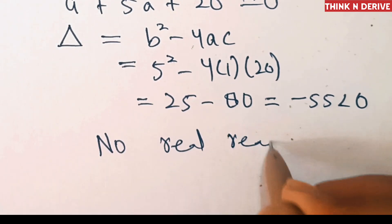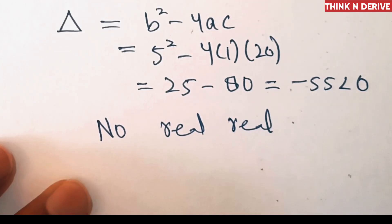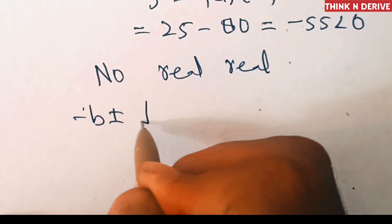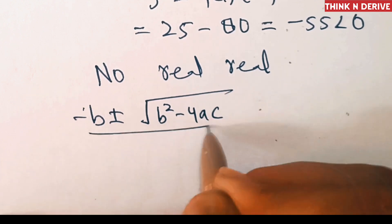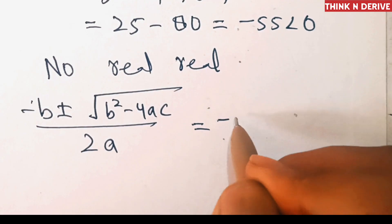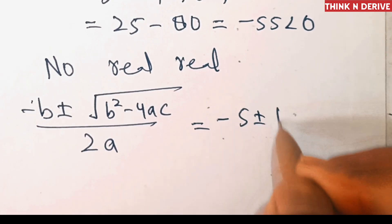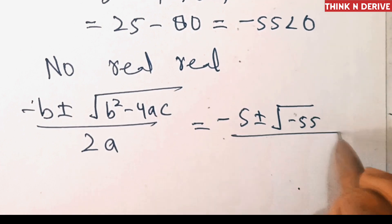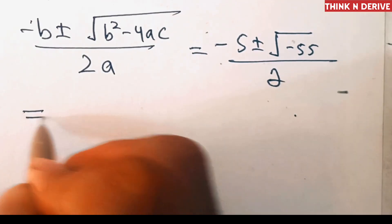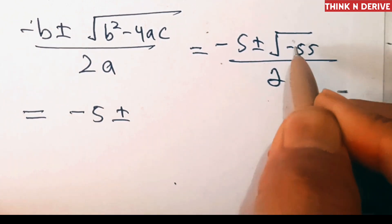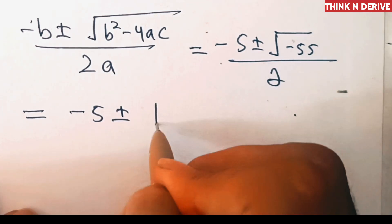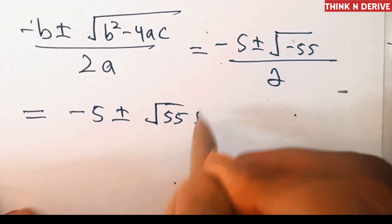We find the complex roots using the formula: a = (−b ± √(b² − 4ac)) / 2a = (−5 ± √(−55)) / 2. Since √(−1) = i (iota), this becomes a = (−5 ± i√55) / 2. These are the two complex roots of the equation.